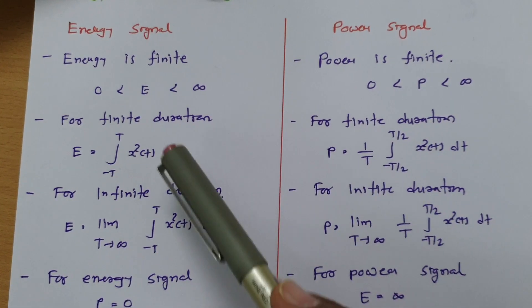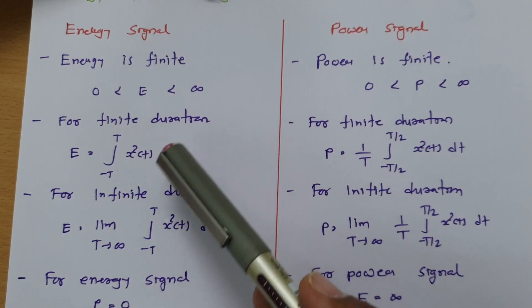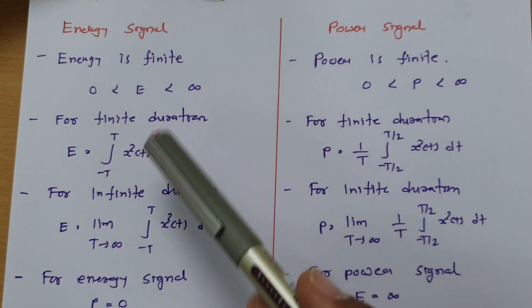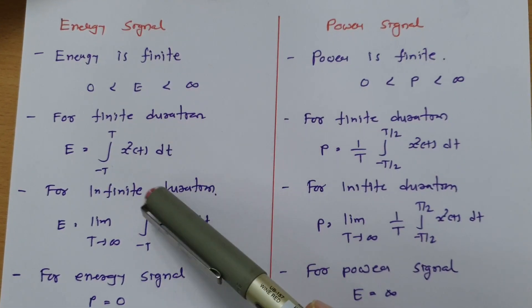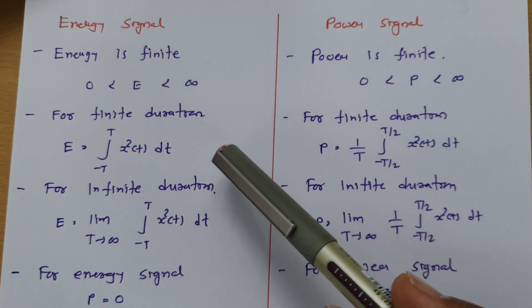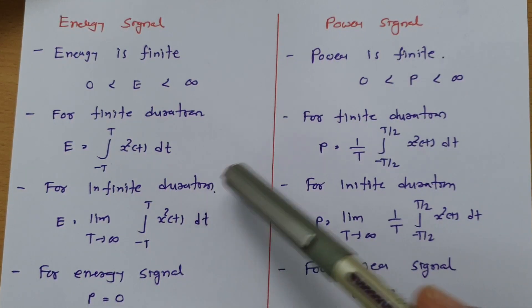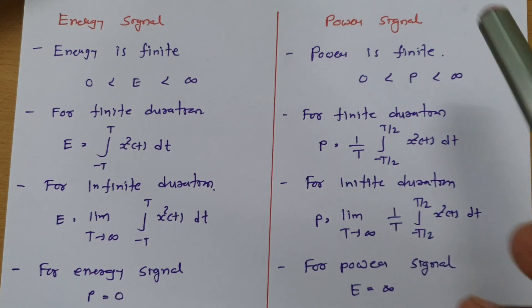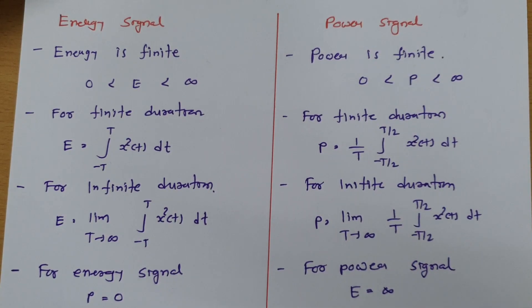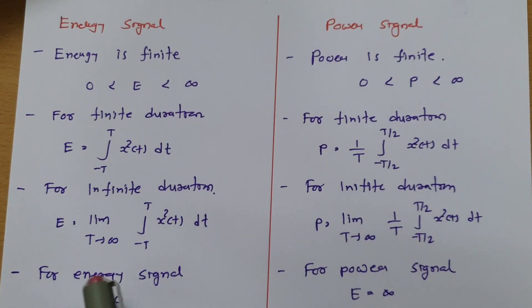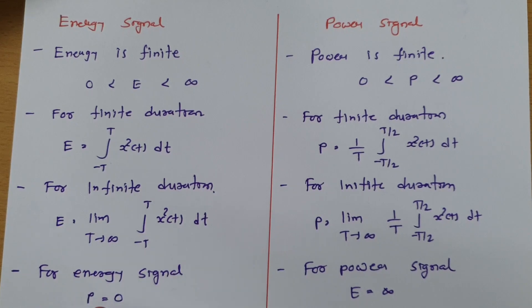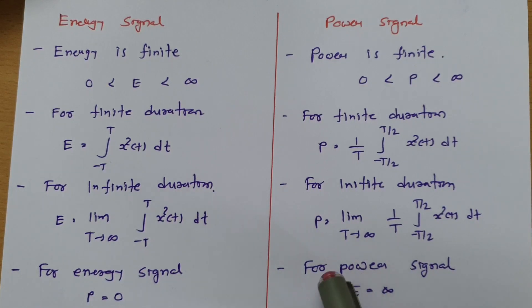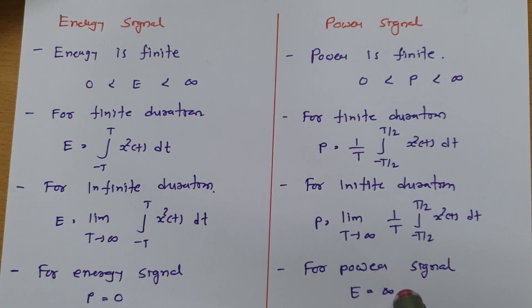If you find the energy of a signal is finite, we can say that signal is an energy signal, calculated using the basic formula. If you calculate the power of a signal and it is finite, then that signal is a power signal. Importantly, if you have an energy signal, the power of that signal will be zero. And if you have a power signal, the energy of that signal will be infinite.